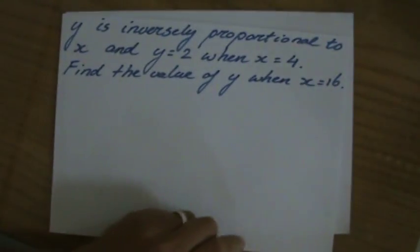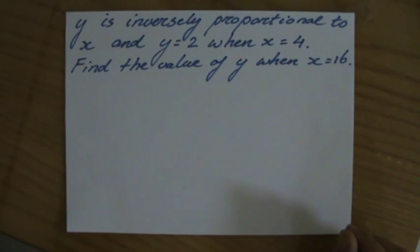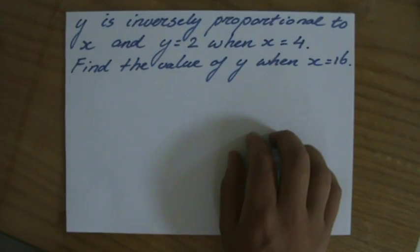y equals a constant divided by x. Okay. So, knowing that, we can answer these questions now. y is inversely proportional to x and y is 2 when x is 4. Find the value of y when x is 16.